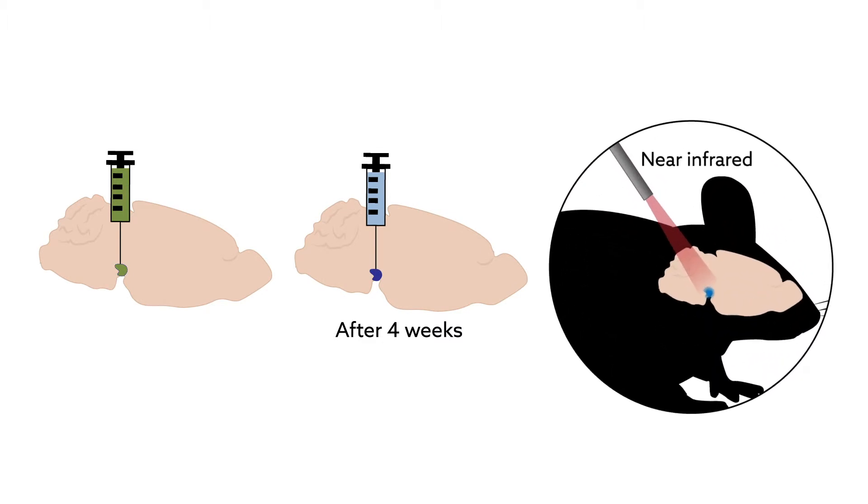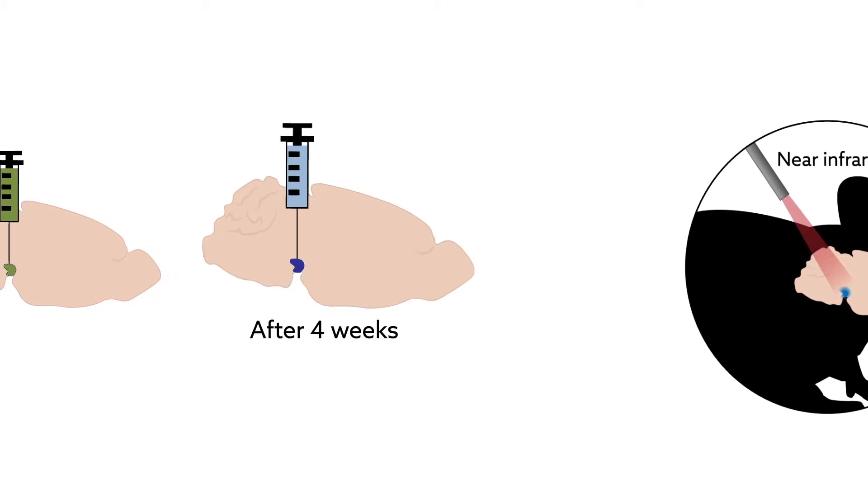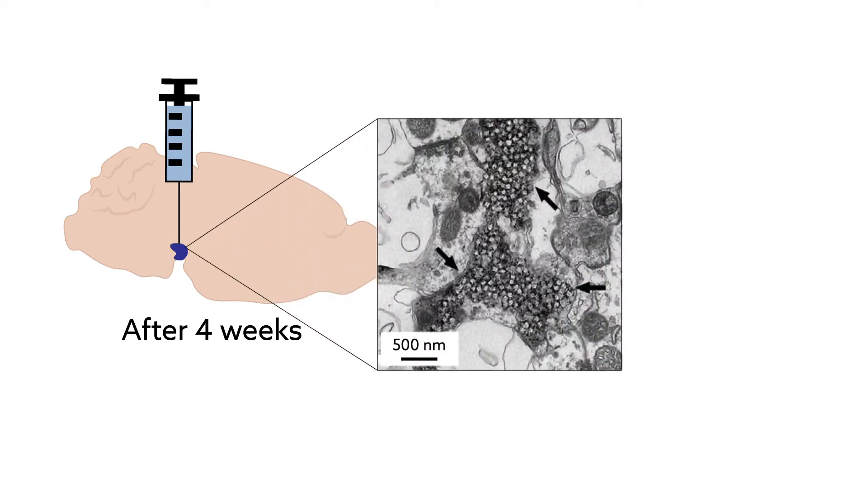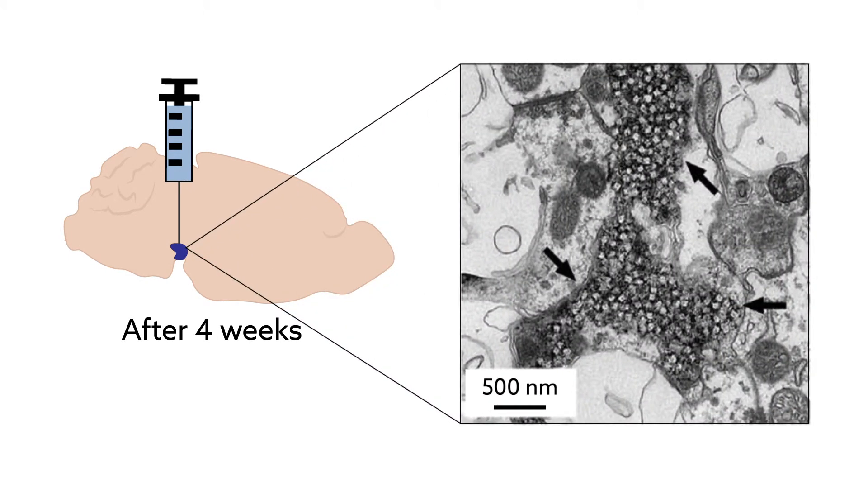The scientists injected the nanoparticles into different brain regions in mice and then applied transcranial near-infrared stimulation, providing a minimally invasive way to manipulate brain activity. They found that the nanoparticles largely remained at the site of injection, which gave a high level of control in targeting specific areas.